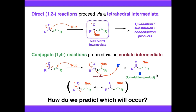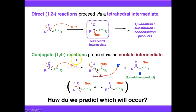So how do we predict which of these pathways will occur? We have taken the same compound and treated it with a nucleophile — in one case we get direct 1,2 attack, and in another we get conjugate 1,4 attack. How do we know which is going to happen?